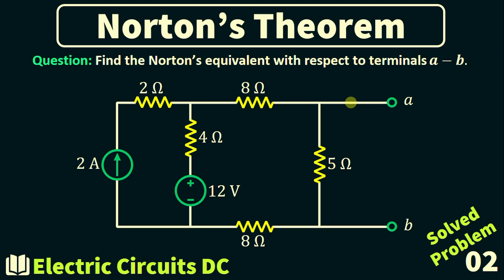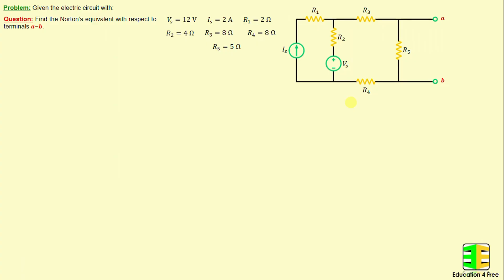Let's get started with solved problem number 2. Let's consider this network consisting of 5 resistors labeled R1 through R5, as well as 1 independent voltage source VS and 1 independent current source IS. The question now is to find the Norton's equivalent with respect to terminals A and B.